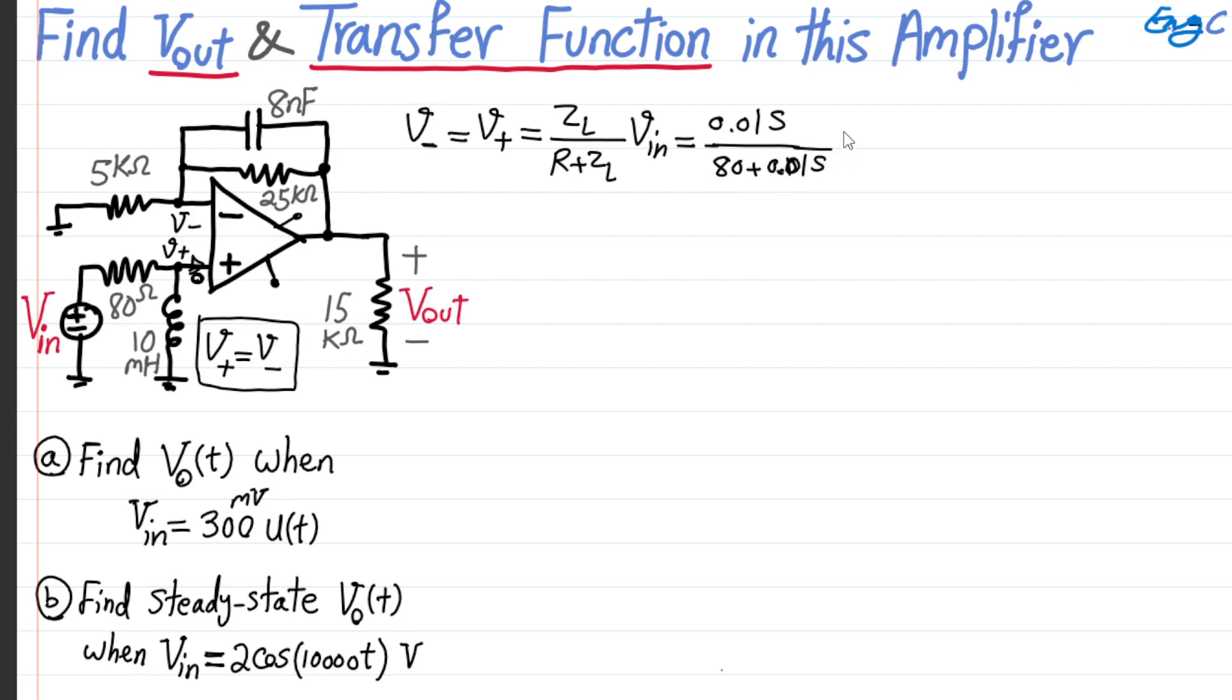And then, of course, times Vin. And then in summary, we get equation number one that says voltage at negative the same as voltage at positive input terminal of the op-amp equal to S divided by 8,000 plus S times Vin. So we keep this as equation number one. It's very important for us. We're going to use it to get to transfer function and then answer the question for part A and B. So that's equation one.